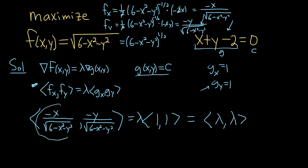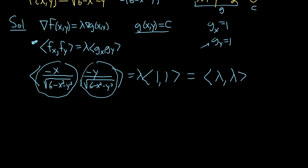So this is equal to lambda, and this is equal to lambda. So we're getting that lambda is equal to negative x over the square root of 6 minus x squared minus y squared. We're also getting that lambda is equal to negative y over the square root of 6 minus x squared minus y squared. So lambda is equal to both of these things.